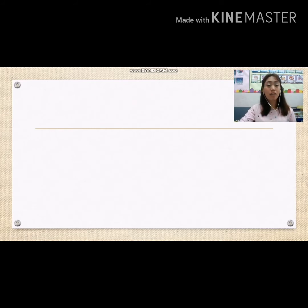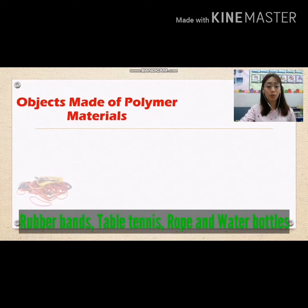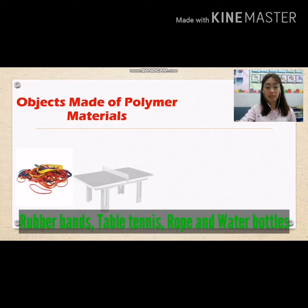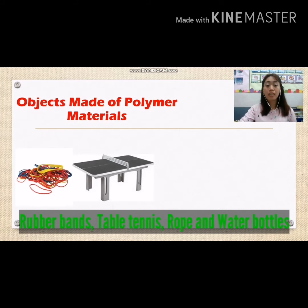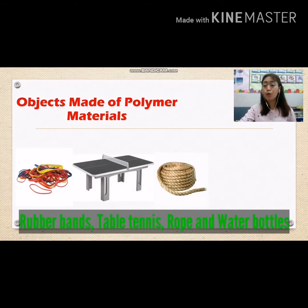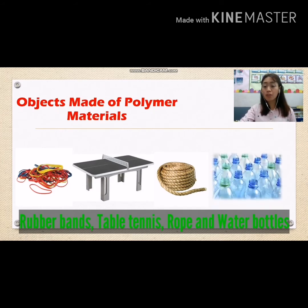More examples of polymer objects are rubber bands, table tennis ball, rope, and water bottles.